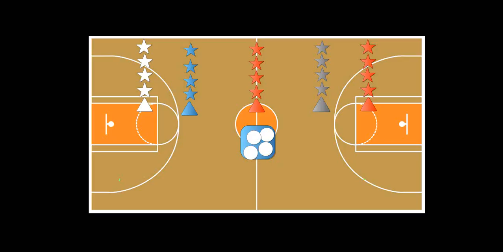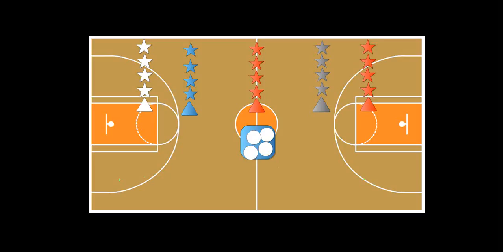The way I set the teams up for my class is I have four teams. Each one of these triangles are cones, and the rest of the players are lined up in relay style. On the signal, the person from each line will dribble their basketball.